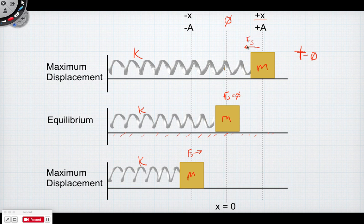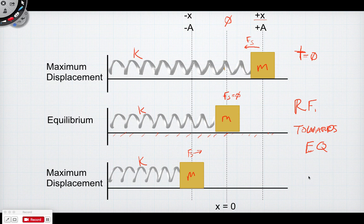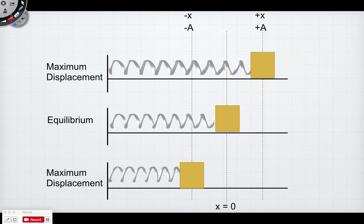A restoring force always goes toward equilibrium and must be linearly proportional. We'll track position, velocity, and acceleration through the cycle, and eventually kinetic and potential energies. Amplitude is the maximum displacement from equilibrium. This understanding of a mass-spring system makes the restoring force more intuitive than the gravitational case we'll see with pendulums.